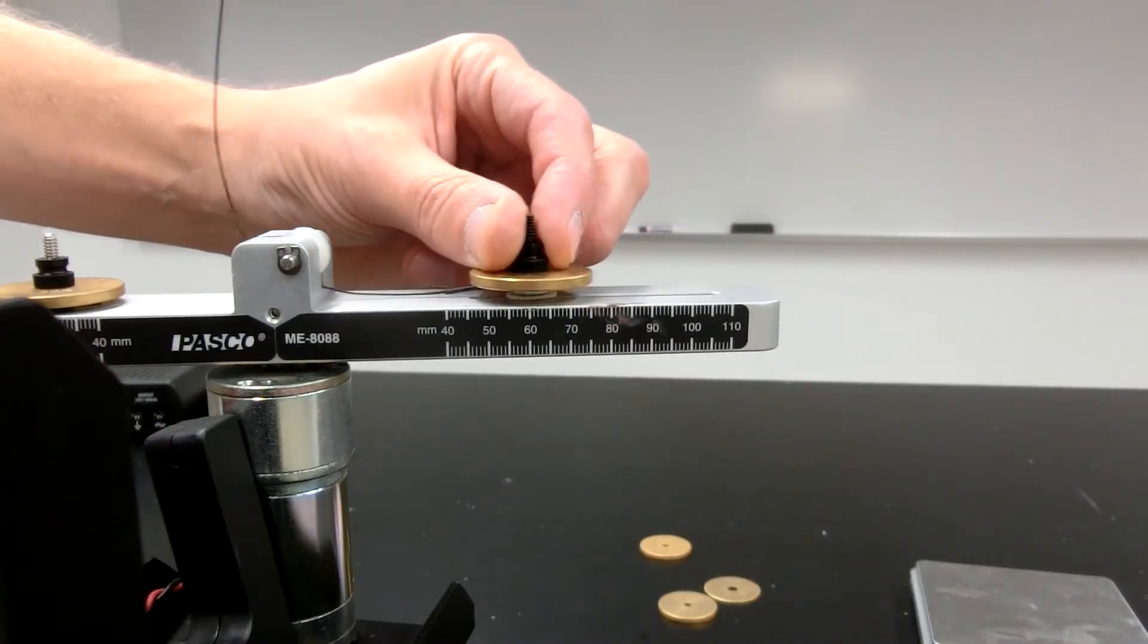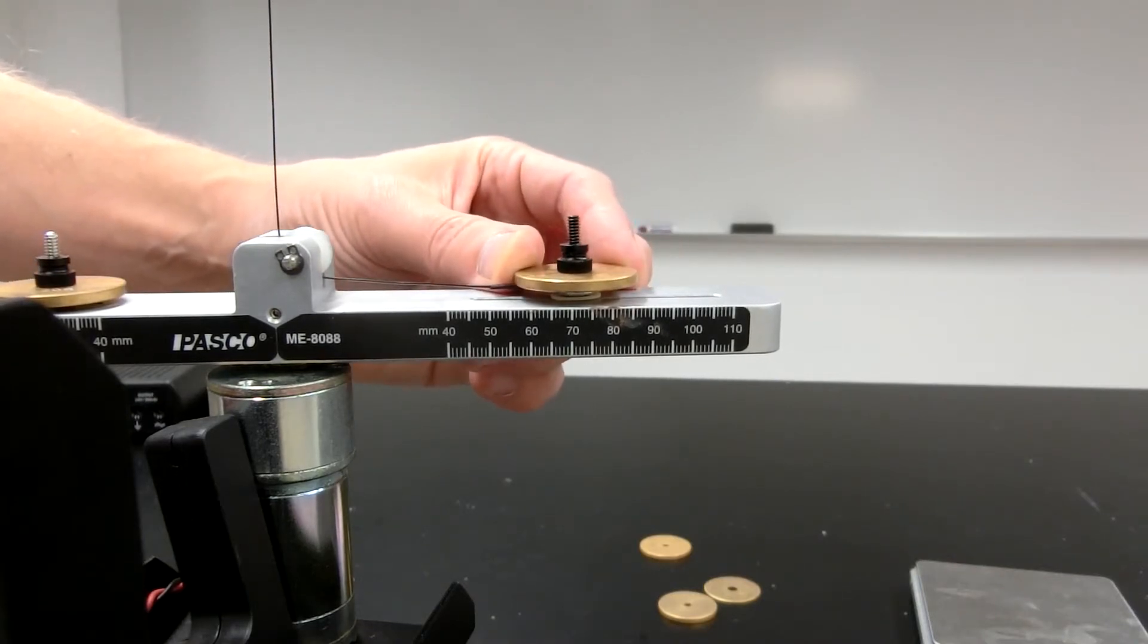Weights are attached to a sliding mass holder that can move along the arm. Measurement markings on the arm show the radius of the mass's rotation.